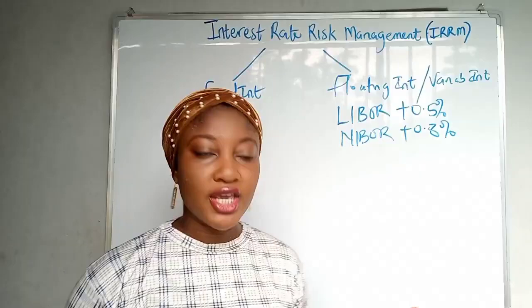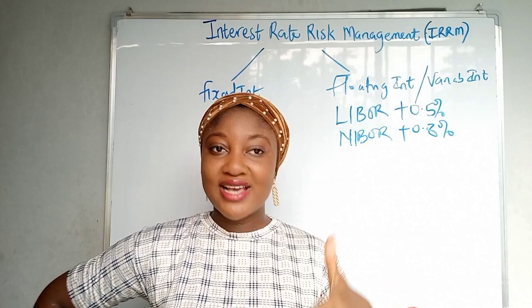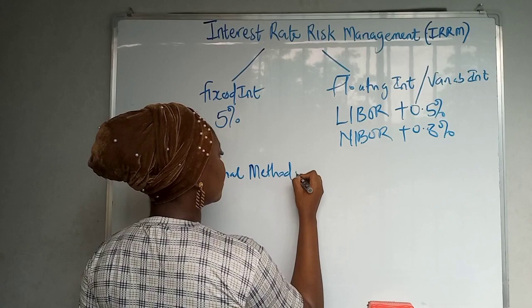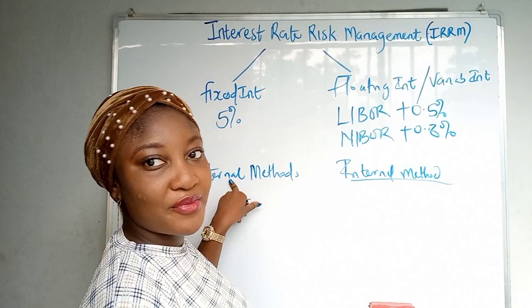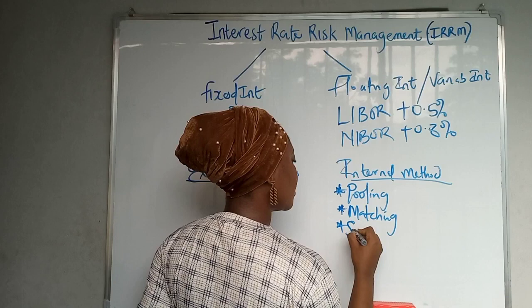Companies need to protect against the possibility of an increase in interest rates, because when interest rates increase it's a loss to the company — you have to pay more interest. That's where hedging against a rise in interest rates comes in. You can use external methods or internal methods. External methods include forward rate agreements and interest rate guarantees. Internal methods include pooling, matching, and smoothing.